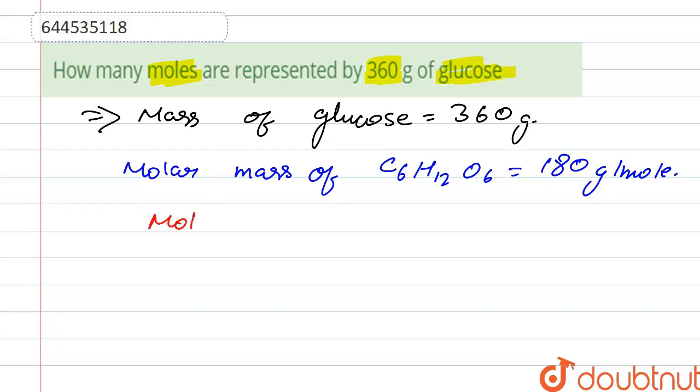So we have to calculate the mole. Number of mole is calculated as given mass upon molar mass. So given mass is 360 and molar mass is 180 gram per mole. Here it is gram, here it is gram per mole.